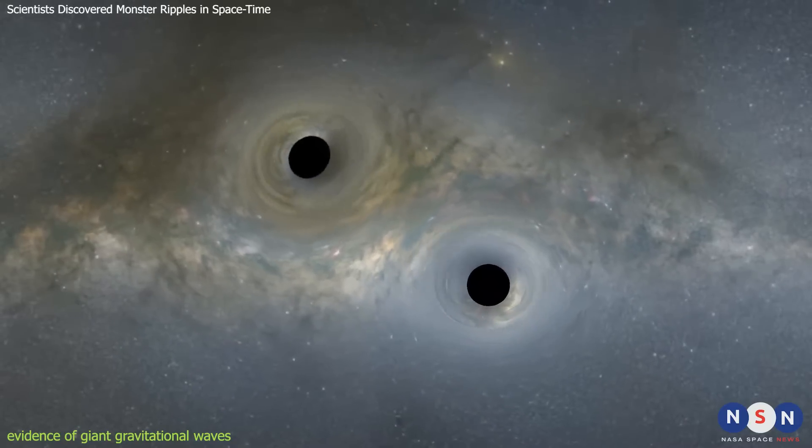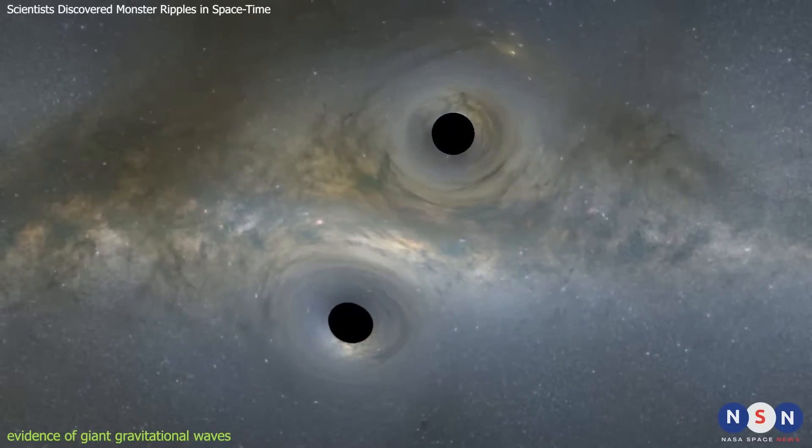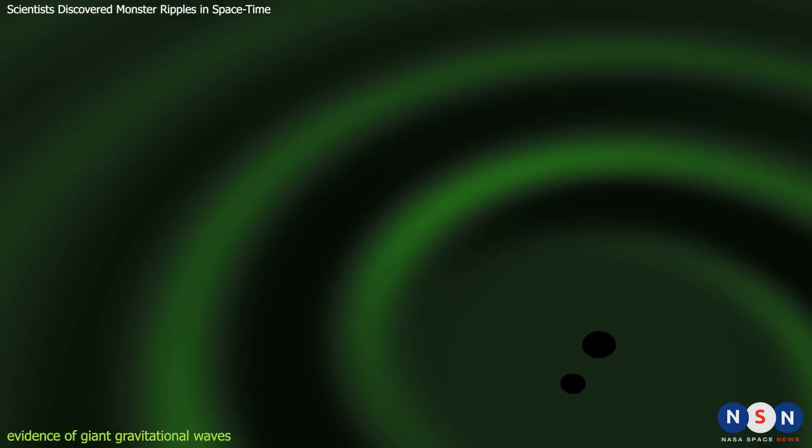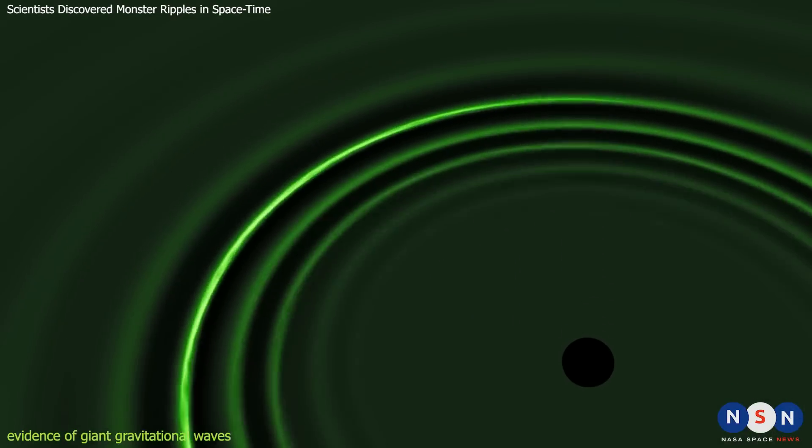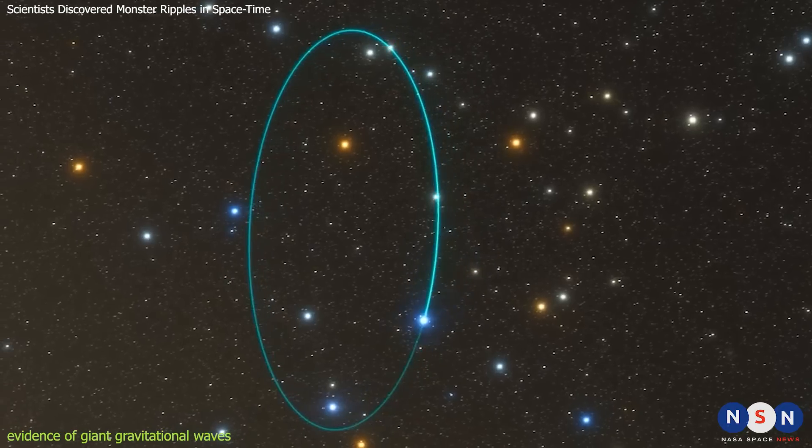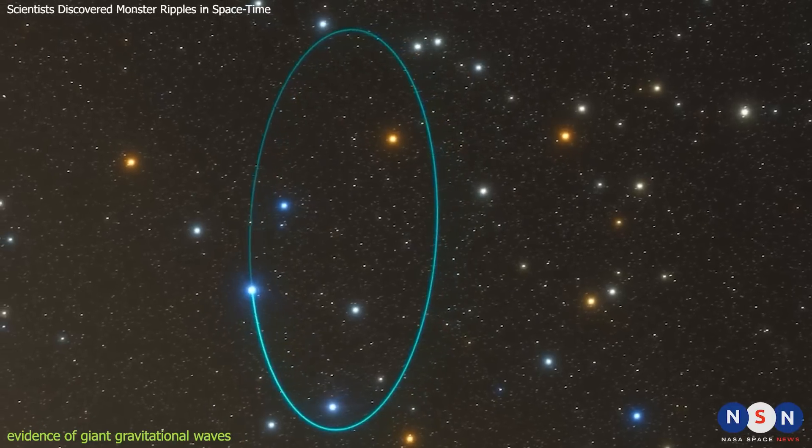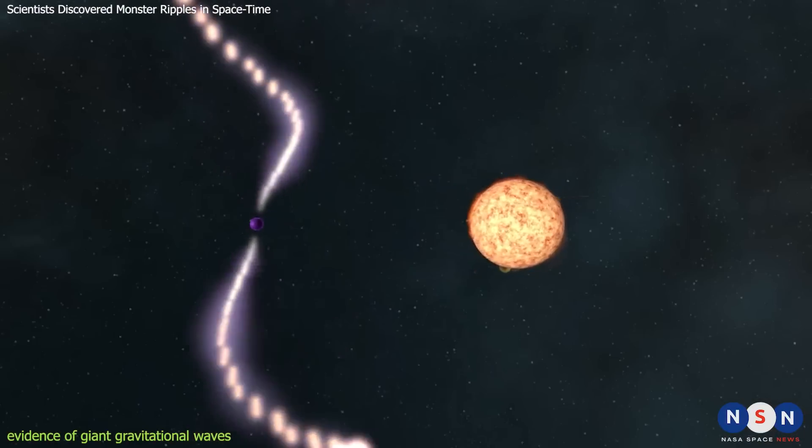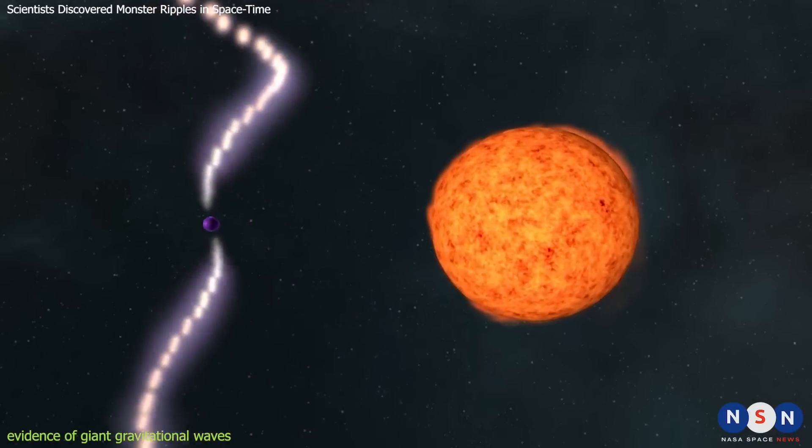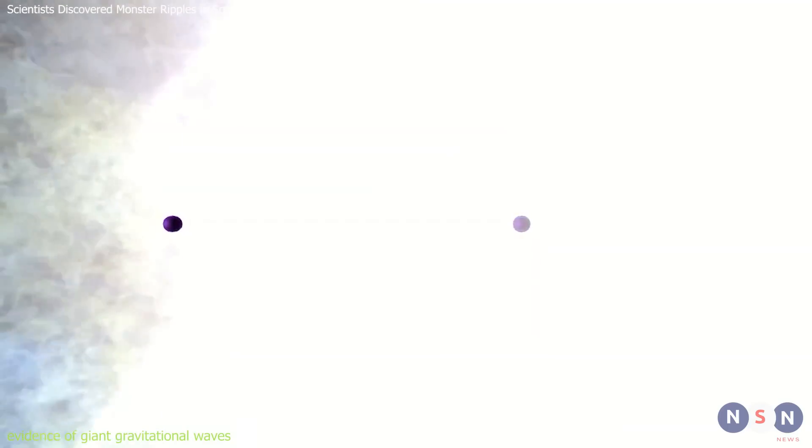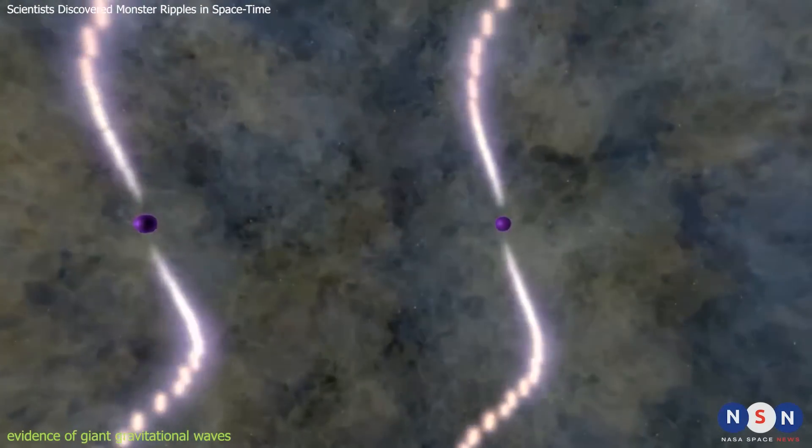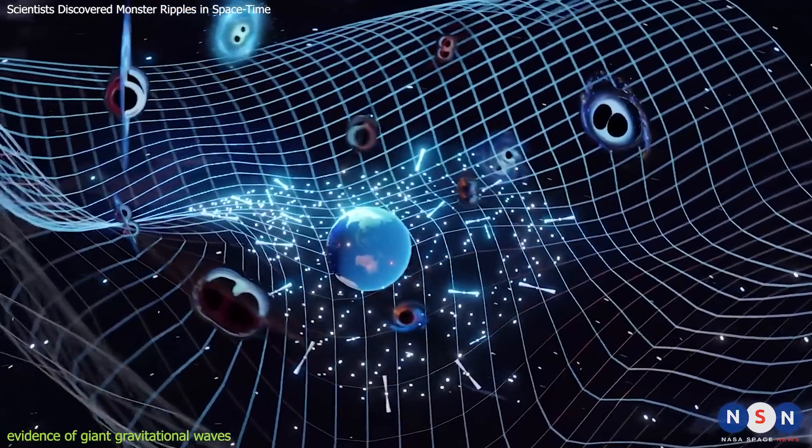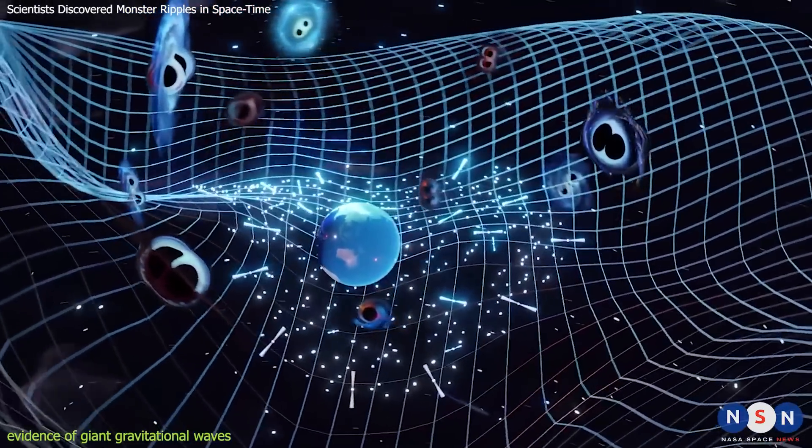These binaries emit gravitational waves as they orbit each other, gradually losing energy and getting closer. But they do so very slowly, because they are very far apart and very massive. It can take billions of years for them to complete one orbit, and even longer for them to merge. That means that at any given time, there are many such binaries in the universe, each emitting gravitational waves with different frequencies and directions. These waves add up to form a stochastic background that fills the entire sky.